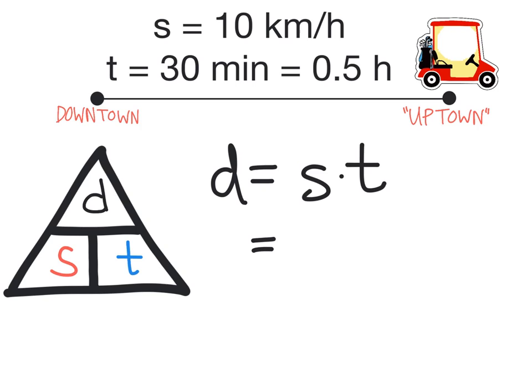Now all that is left to do is substitute our variables. Speed equals 10 km per hour, and we are multiplying that by time, which is 0.5 hours.